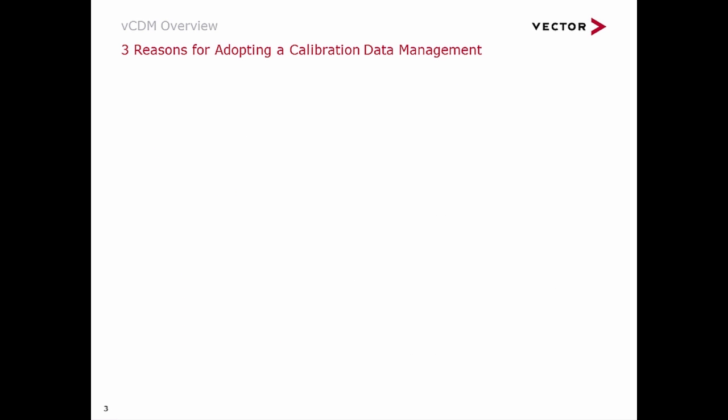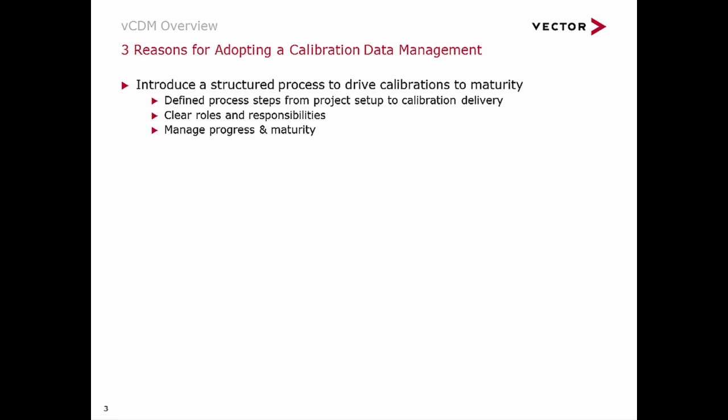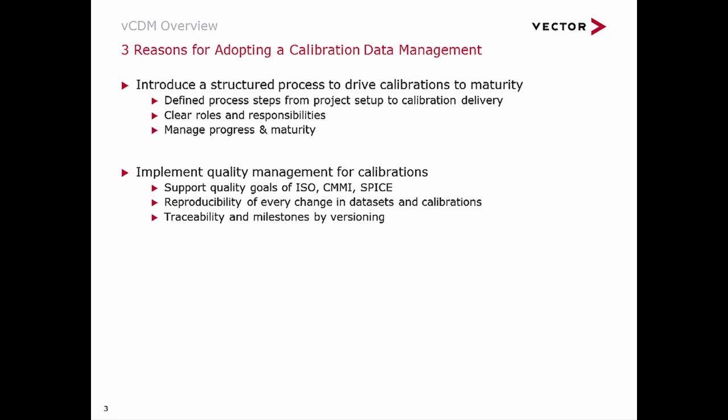There are three major reasons to adopt a CDM system. Many calibration projects have multiple engineers working on the same project with different functions. Merging their work results for a consistent calibration data set is challenging. A CDM system helps you implement a structured process with clear roles and responsibilities, identifies and resolves parameter conflicts, and provides progress and maturity tracking.